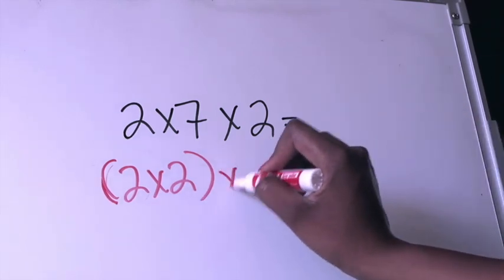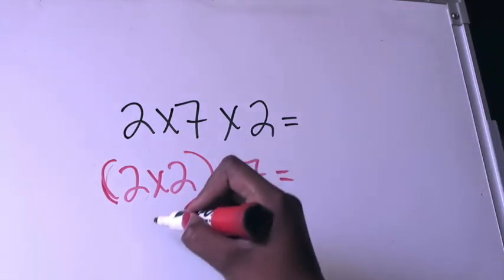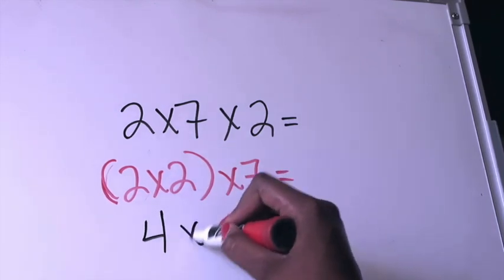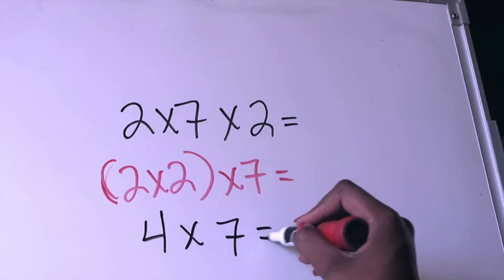I'm going to do (2×2) and I'm going to multiply that by 7. Now, following the rules of parentheses, I'm going to solve this section first. 2×2 is 4. I'm going to bring down my multiplication symbol that's left and then the last factor which is 7.